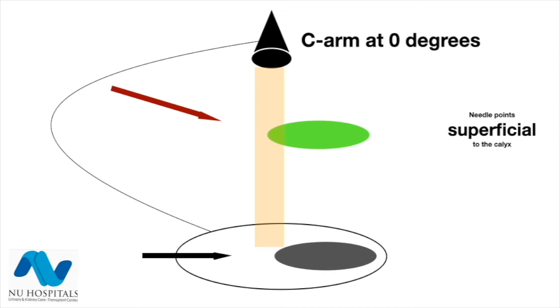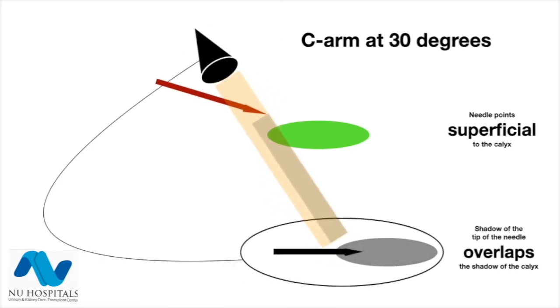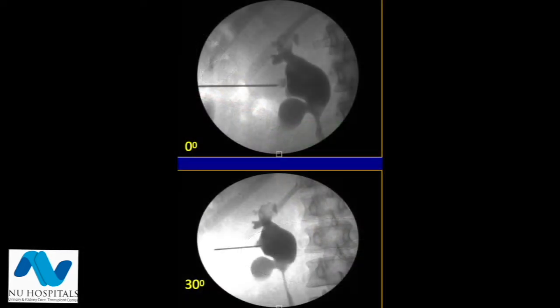If the needle tip is superficial to the calyx, once you turn from 0 to 30 degrees, the shadow of the needle tip will fall on the body of the calyx and will appear to have crossed the edge of the calyx on the fluoroscopy screen. If you look at the zero degree image, the needle has reached the edge of the calyx, but at 30 degrees it appears to have crossed beyond the edge of the calyx, therefore this needle is superficial to the calyx.